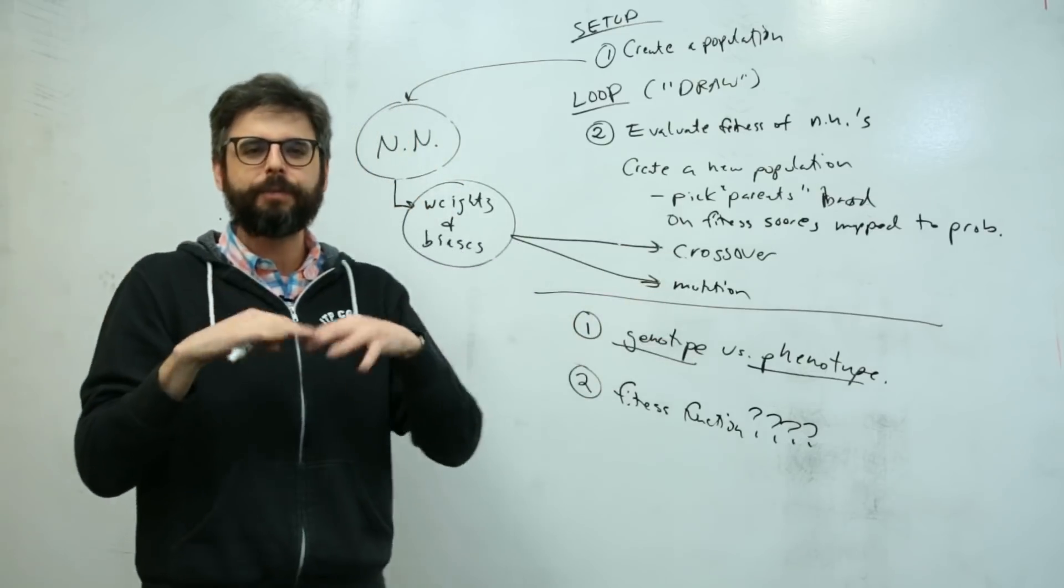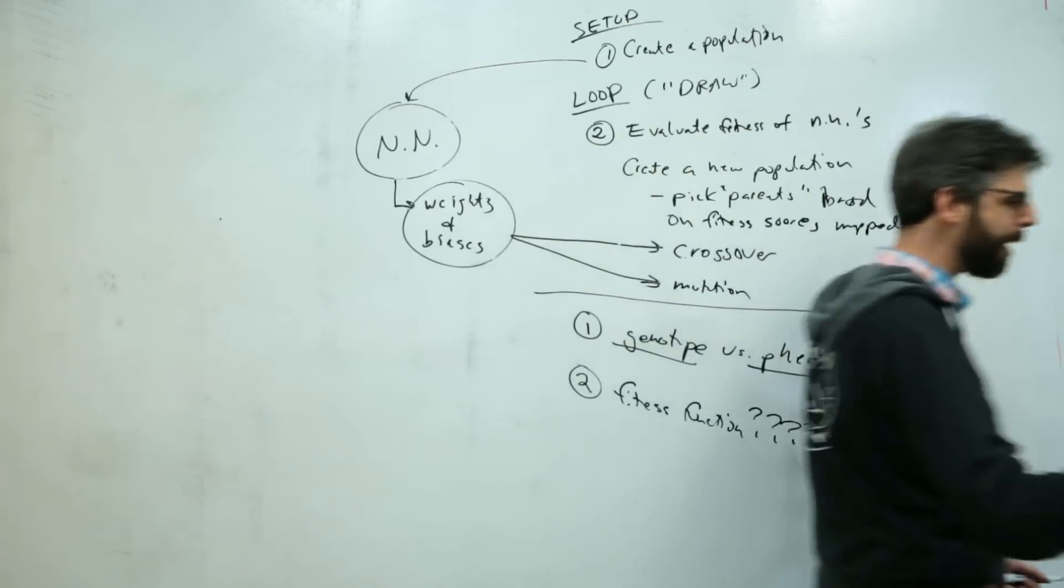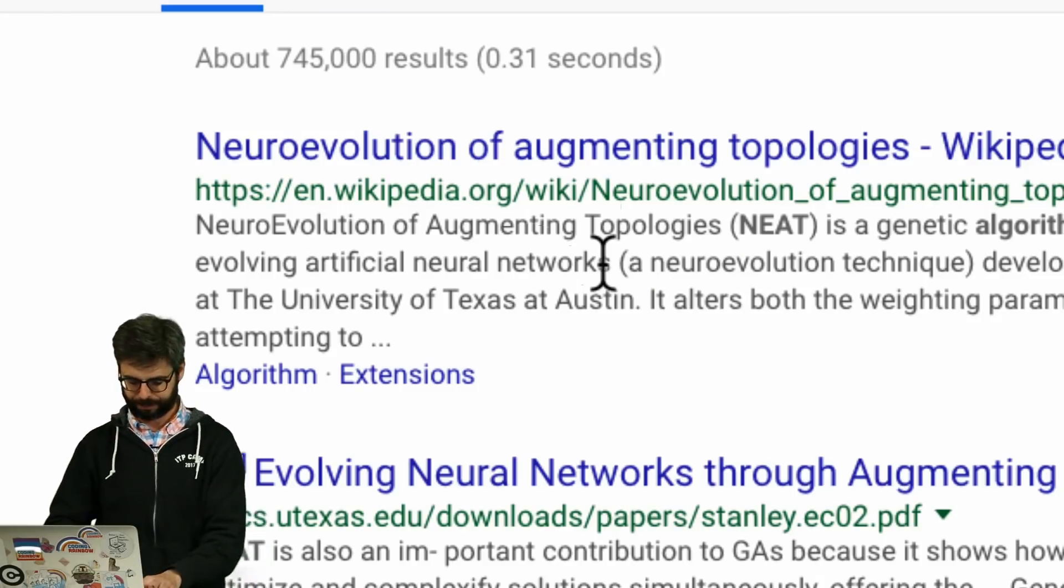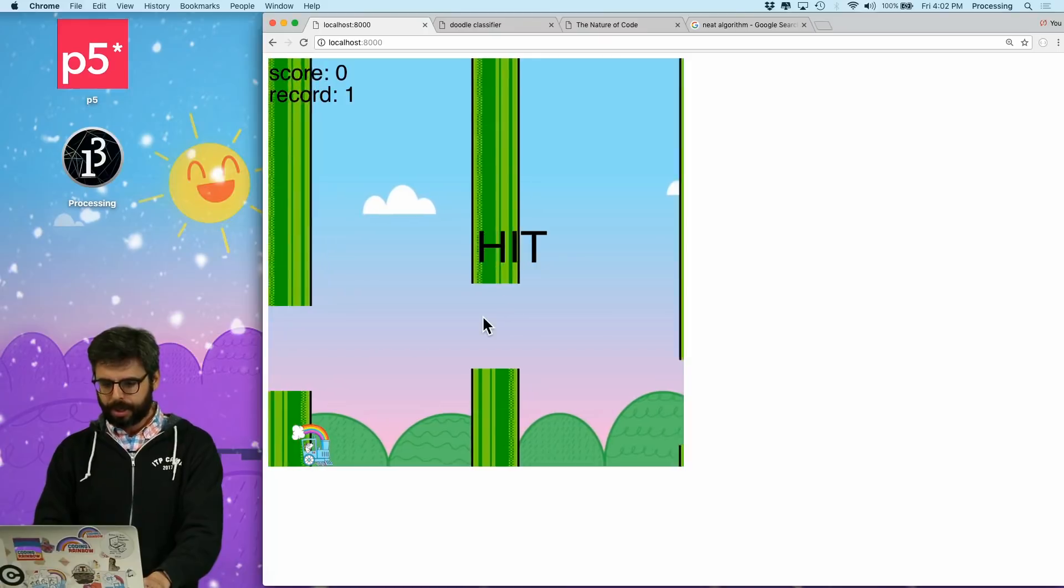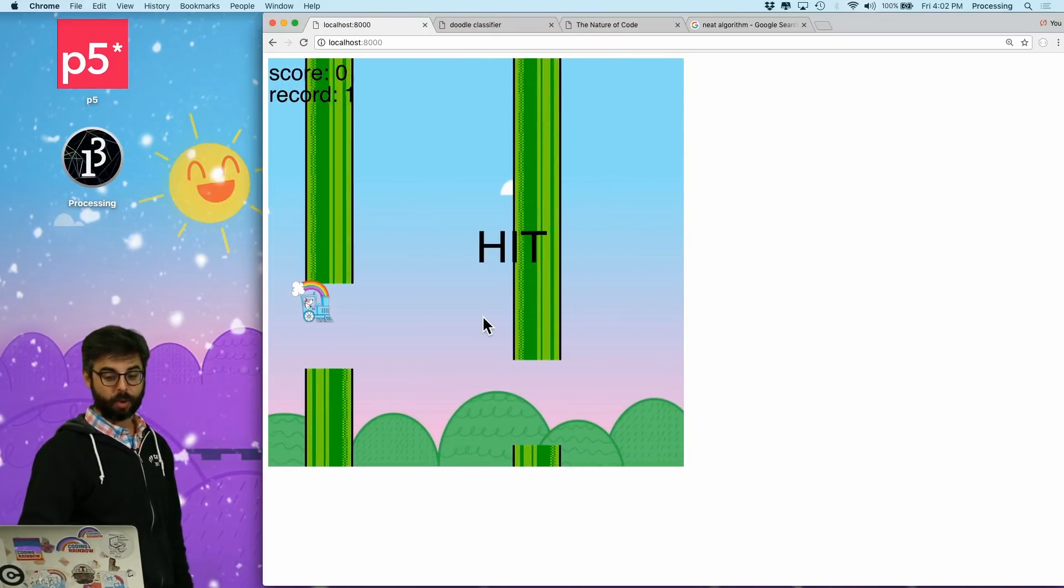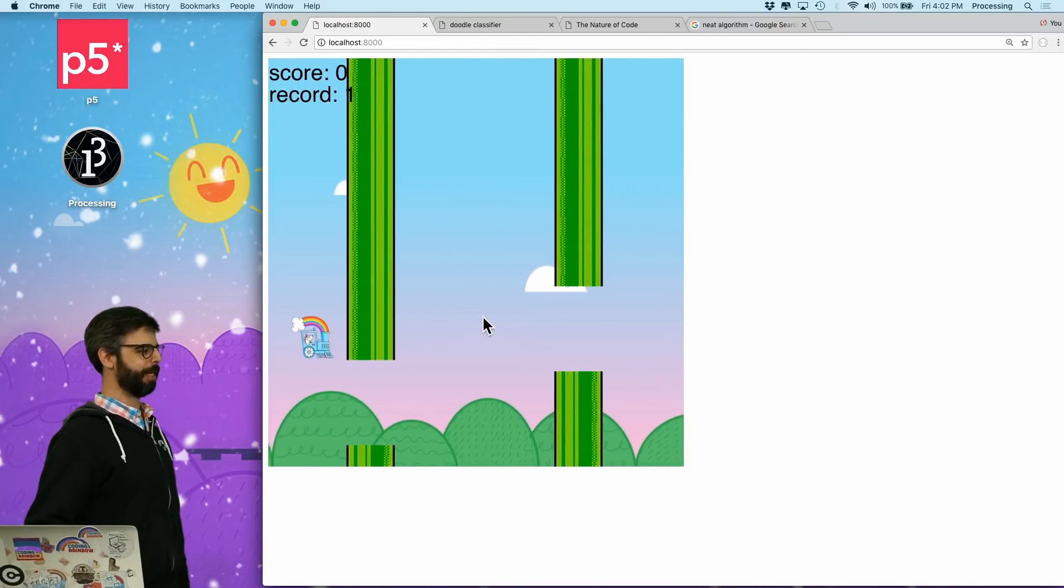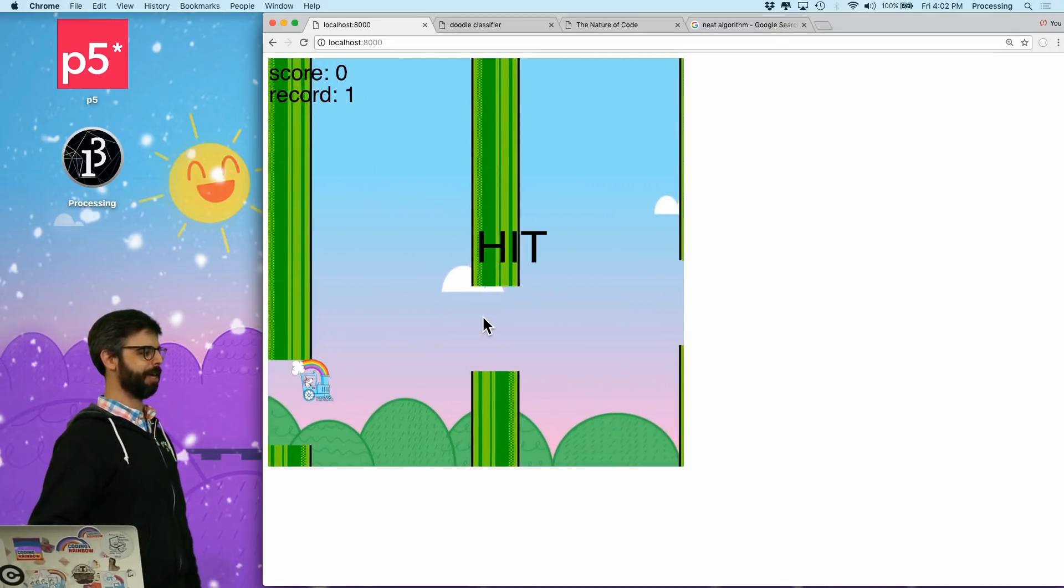With the Flappy Bird scenario, if we think about the Flappy Bird game, what is the fitness here? The fitness would simply be the score. I am a neural network playing Flappy Coding Train.